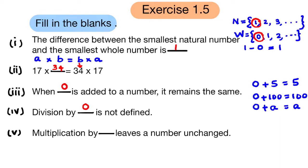Fifth question: Multiplication by 1 leaves a number unchanged. When we multiply any number by 1, we get the same number. For example, 1 × 8 is 8, 1 × 50 is 50, and 1 × a is a.